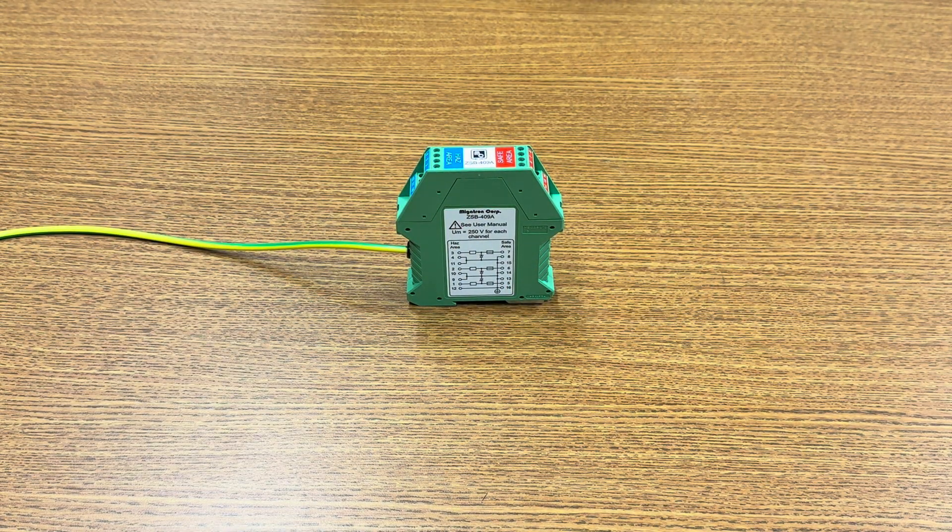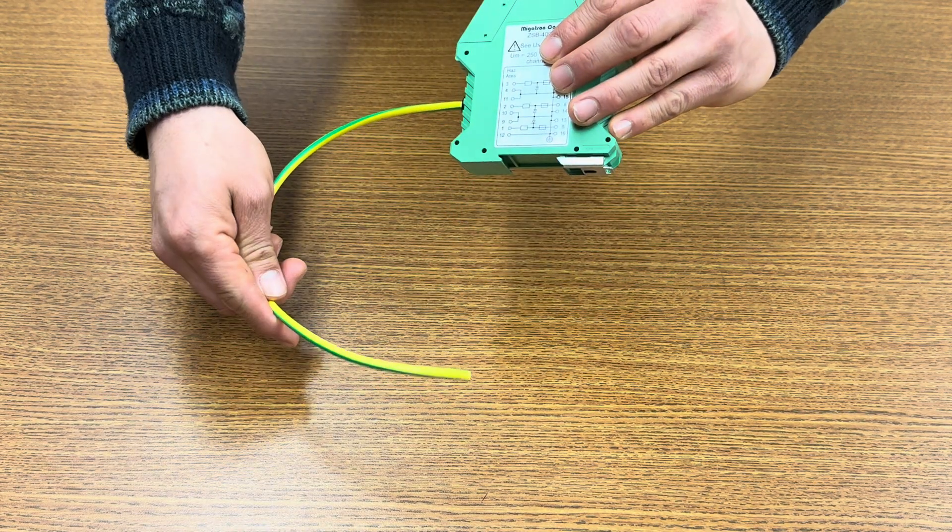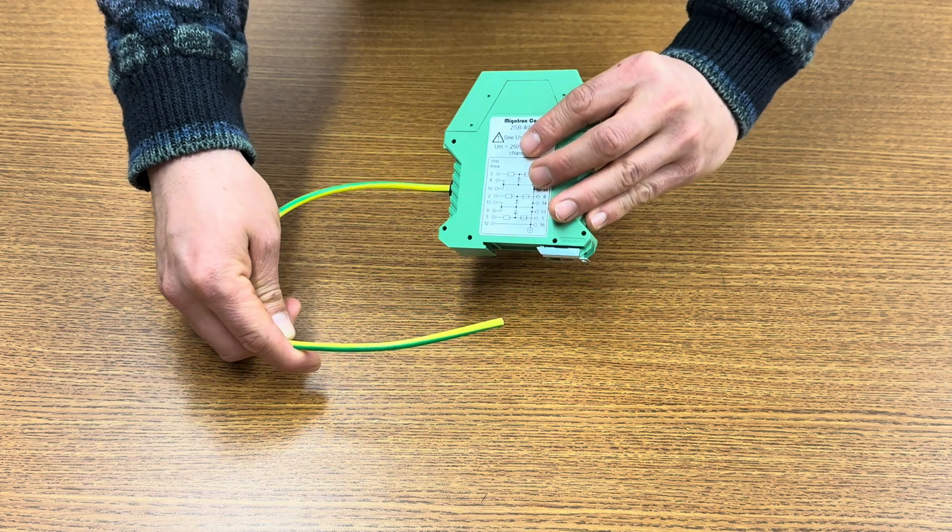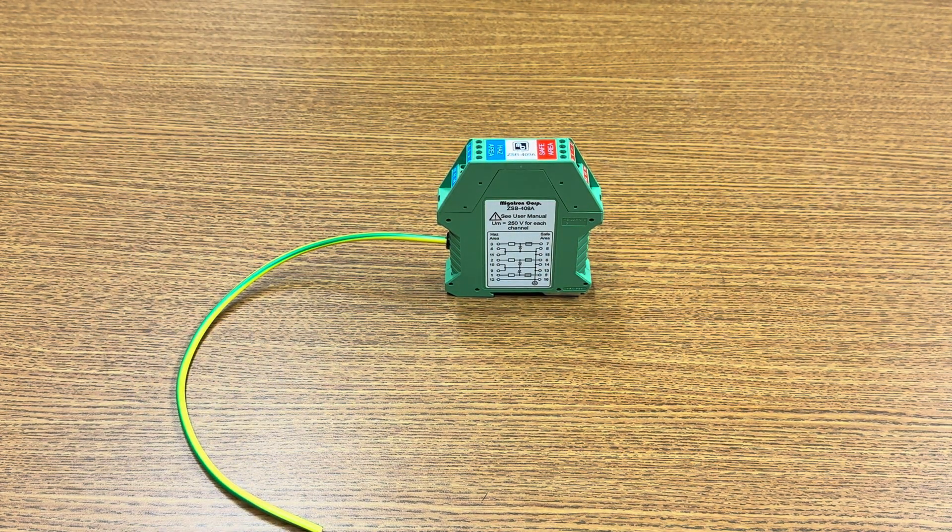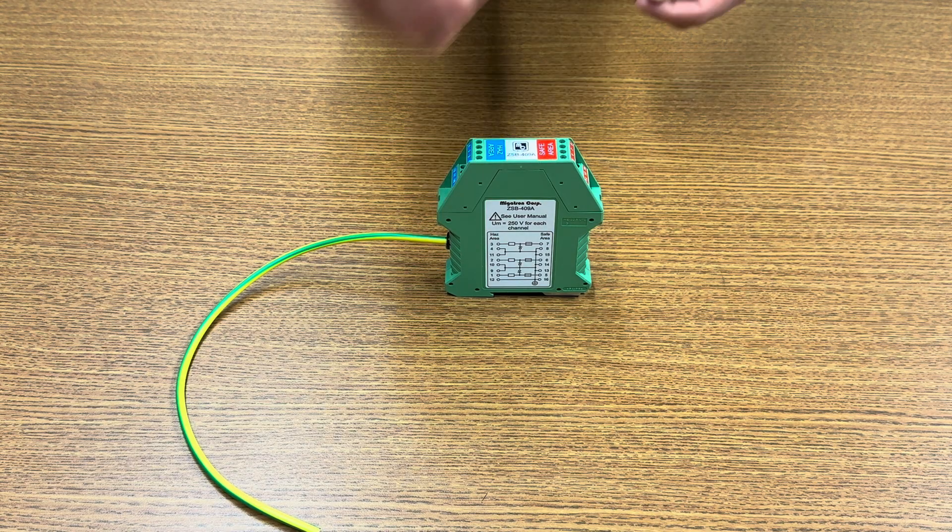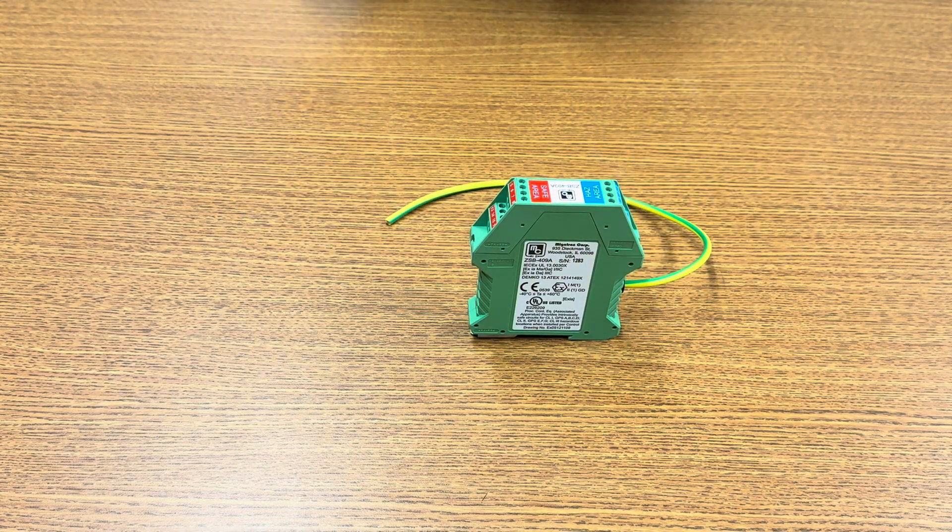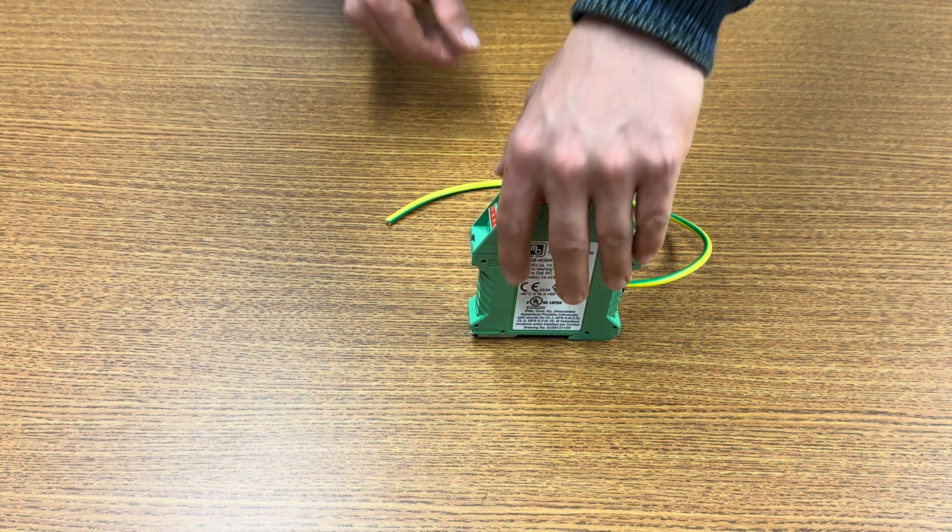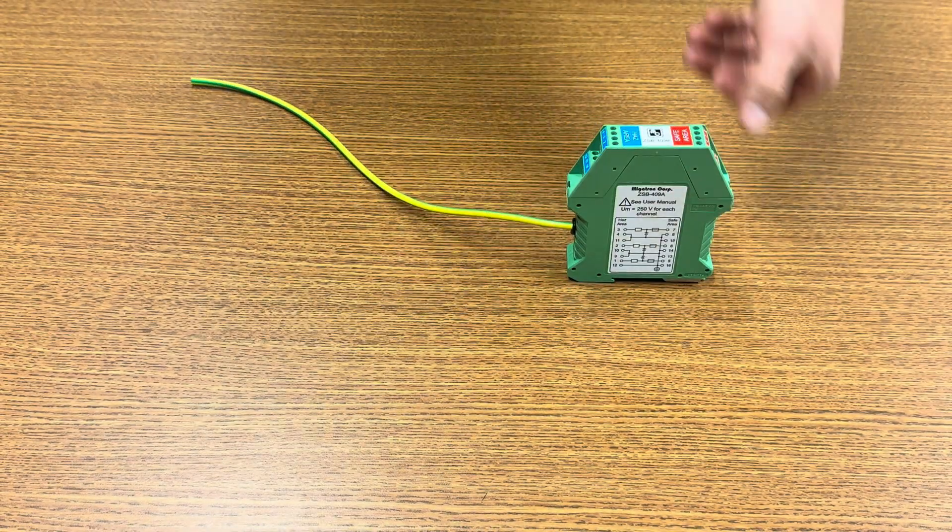The safety barrier is a three-channel DC positive polarity Zener safety barrier for use in intrinsic safety applications. The three-channel design has one 24-volt DC channel and two 10-volt DC channels. The barrier is compatible with Migatron's intrinsically safe ultrasonic sensors.